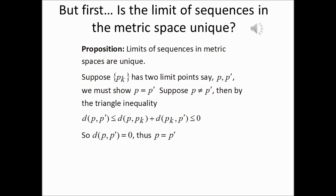So we see that the ordinary distance between p and p prime is going to be less than or equal to 0. But the ordinary distance between two points is non-negative, so the inequalities cannot be strict. This means the ordinary distance between p and p prime has to be 0, which means p has to equal p prime — because that's the only situation where the distance is 0. If p is not equal to p prime, then the ordinary distance between p and p prime has to be greater than 0, by the axioms.